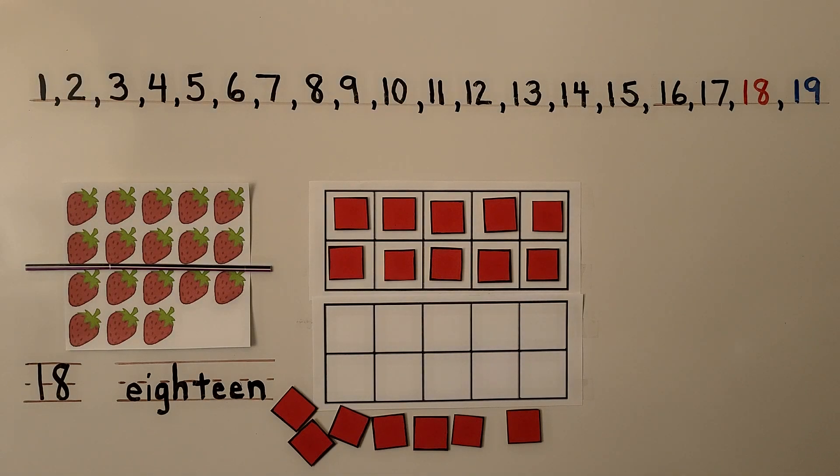We have one set of 10 and 8 more. There is 18 in all. And we can show one set of 10 and 8 more with counters.